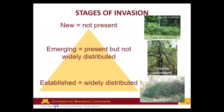Let's take a moment to think about stages of invasion. Anything that is new or not present is an early stage invasion — an example in Minnesota would be tree of heaven. Things that are emerging, so present but not widely distributed — an example would be oriental bittersweet, known and problematic in only a few communities. Then we have established and widely distributed — a good example is buckthorn. These stages impact our management options. New species require early detection and rapid response. Established species have the fewest management options, yet still require continuous management.